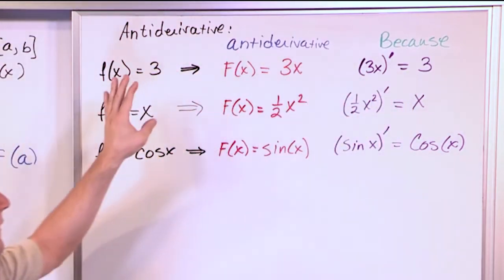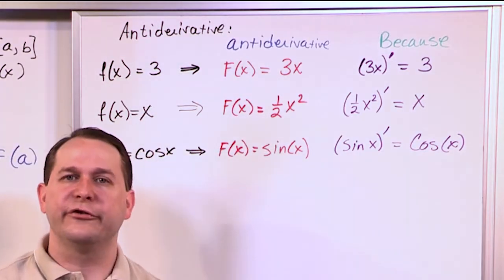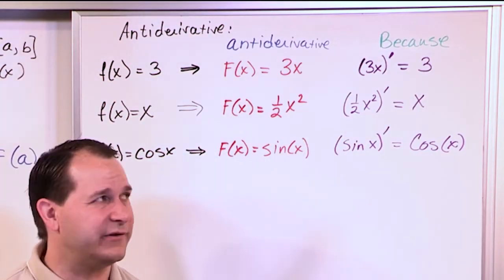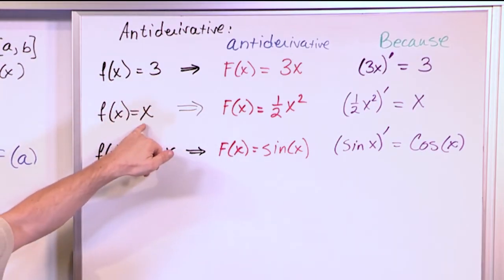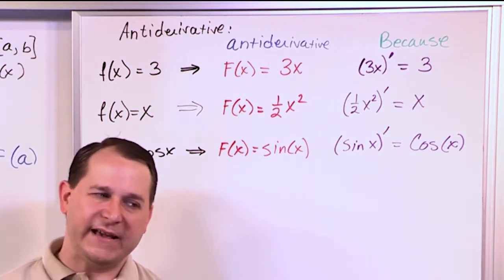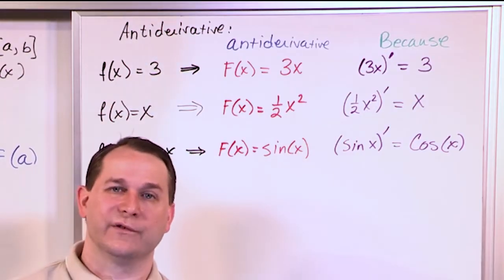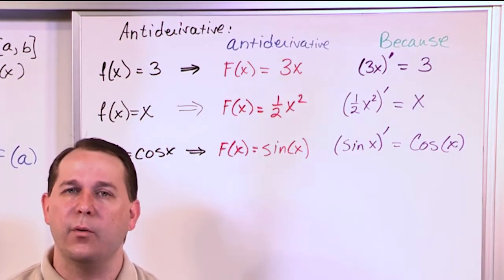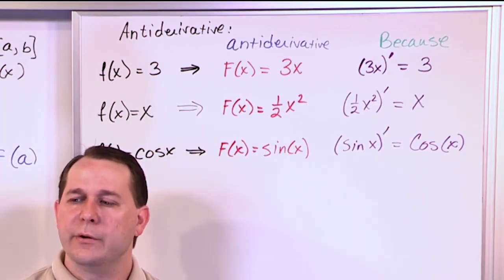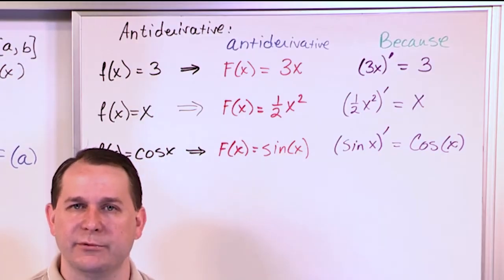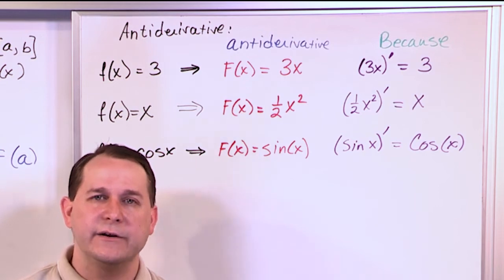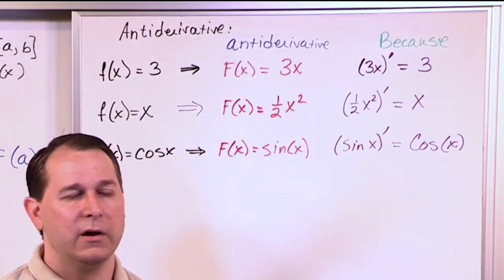Anti-derivatives and derivatives are basically opposites. You go up to get to the anti-derivative, and if you take the derivative, you go right back down to your original function. These examples are specifically chosen because they're easy to check. But if you have a complicated function — like x squared plus 3x over sine of x — it's going to be very difficult to figure out the anti-derivative. Most of the rest of this course is about techniques people have developed over the years to find these anti-derivatives.